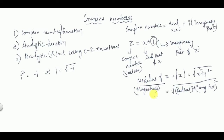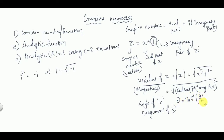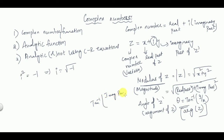If you want to calculate the angle of z, we call that the argument of z. Theta is equal to tan inverse of y by x — that is tan inverse of the imaginary part divided by the real part. This is called the argument of z.